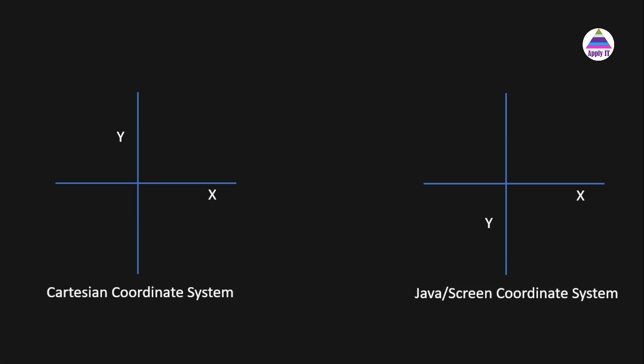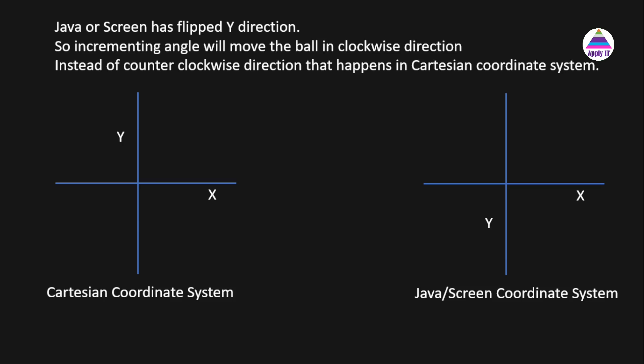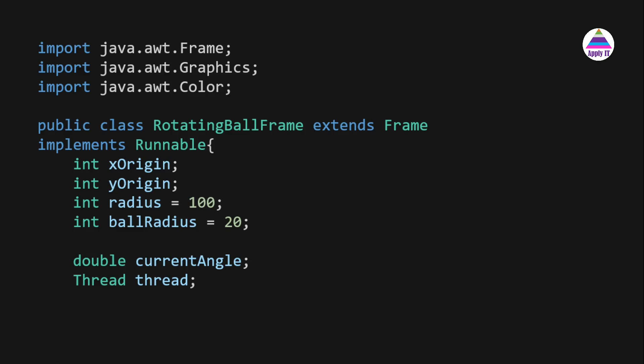Another important concept is the difference between the Cartesian coordinate system and the Java or screen coordinate system. In the Cartesian system, the x-axis goes horizontally and the y-axis points upward. In Java's screen coordinate system, the x-axis is the same, but the y-axis is flipped — it points downward. So when we increment the angle, which would move the ball counter-clockwise in Cartesian coordinates, the flipped y-axis causes the ball to rotate in the clockwise direction.